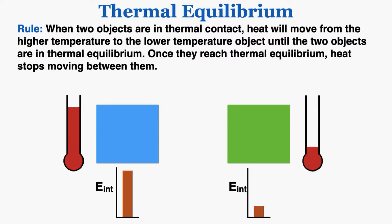Those definitions were very simple. This rule I'm introducing now is the challenging part of the concept and where the math comes in. When two objects are in thermal contact, heat will move from the higher temperature to the lower temperature object until the two objects are in thermal equilibrium. Once they reach thermal equilibrium, heat stops moving between them. This rule is true whenever any two objects in the universe enter into thermal contact.